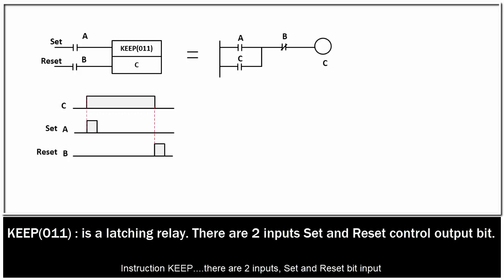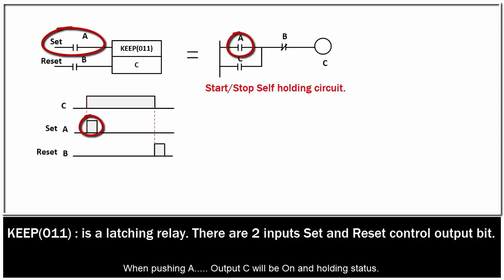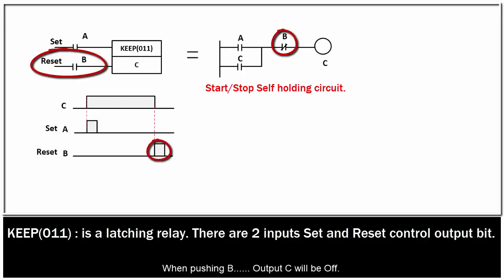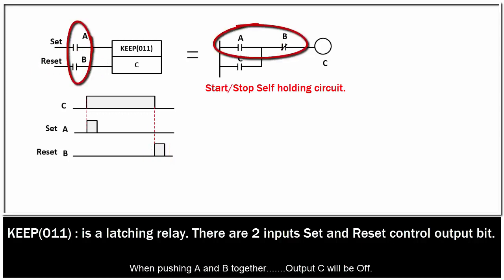Instruction KEEP, there are two inputs, set and reset bit input to control output bit C. The picture above instruction KEEP like start, stop, self-holding circuit. When pushing A, output C will be on and holding status. When pushing B, output C will be off. When pushing A and B together, output C will be off.